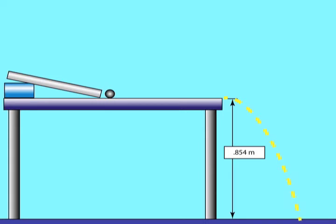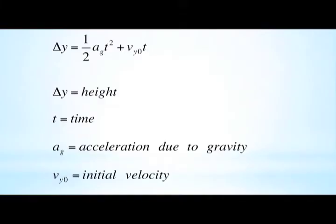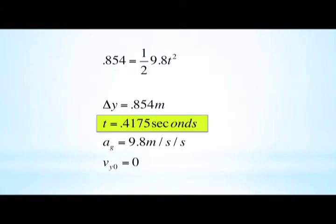I measured the height of the table to be 0.854 meters. Knowing the delta y, I added the 0.854 meters to the equation. The right side of the equation cancels out as the initial acceleration in the y direction was zero. Solving for t, I calculated that it would take 0.4175 seconds for the ball to fall a distance of 0.854 meters.